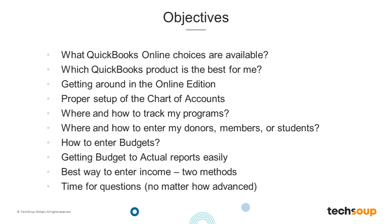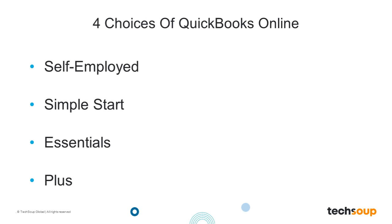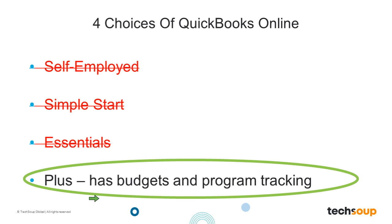So what QuickBooks Online choices are available? There are actually four choices: Self-Employed, Simple Start, Essentials, and Plus. Which one is right for you? That's easy — it's Plus. The reason is that Plus has budgets and program tracking. None of the others have the ability to enter a budget or track programs. So it's a no-brainer: you must have Plus. Fortunately, that is the option you can get from TechSoup at $50 a year.